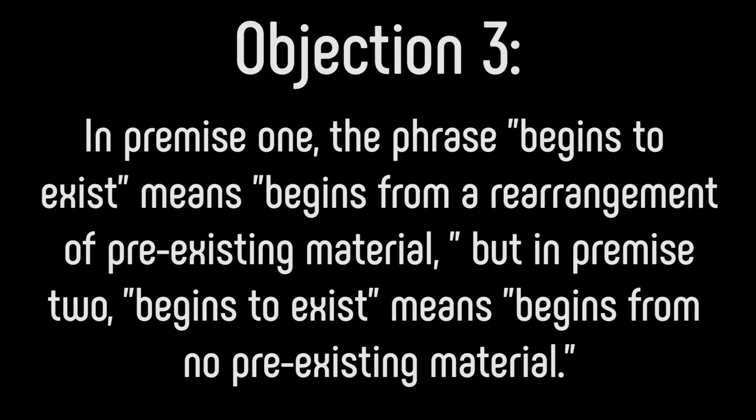Objection three: In premise one, the phrase 'begins to exist' means begins from a rearrangement of pre-existing material, but in premise two, 'begins to exist' means begins from no pre-existing material. This claim is extremely similar to the last one, though technically different, because rather than claiming equivocation on the word 'cause,' it claims equivocation on the phrase 'begins to exist.' Remember, all you need to defeat such a claim is to show that the phrase in question is defined the same way all throughout the argument — so we need one unified definition for 'begins to exist.'